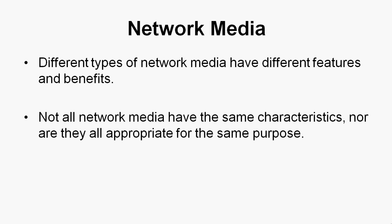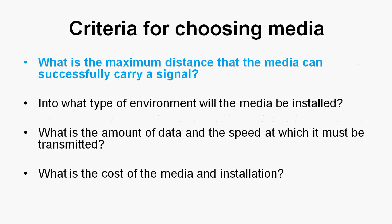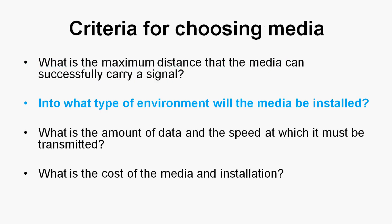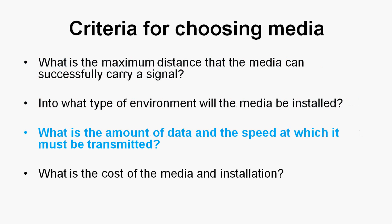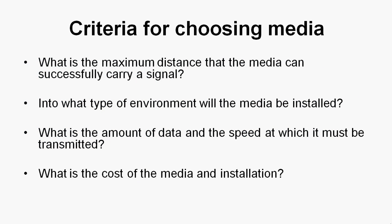The criteria for choosing media are: What is the maximum distance the media can successfully carry a signal? What type of environment will the media be installed in? What is the amount of data and speed at which it must be transmitted? What is the cost of the media and installation? These are the criteria we check before choosing a media.